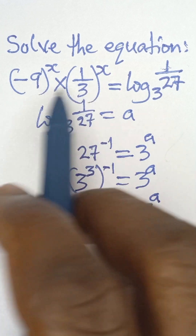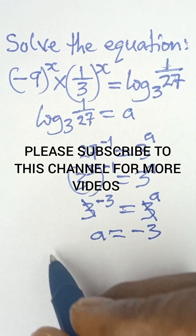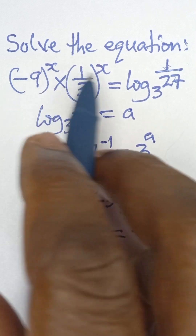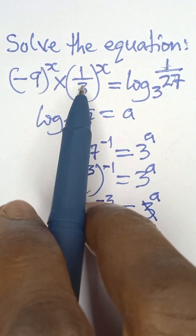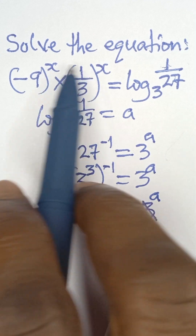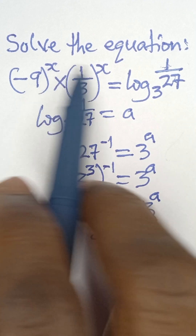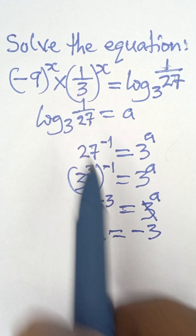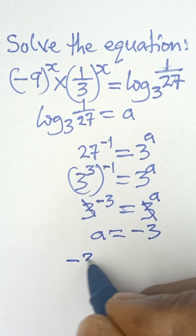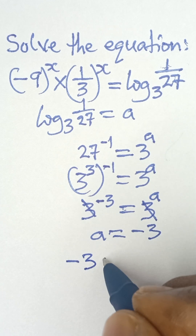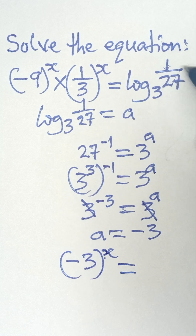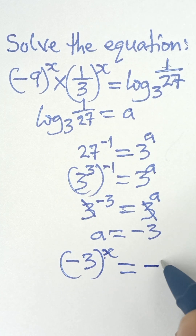Coming back to the left-hand side, since negative 9 and 1 over 3 are multiplying each other and their powers are the same, we multiply the bases together. Negative 9 multiplied by 1 over 3 gives negative 3, so the left-hand side becomes negative 3 raised to the power x, which equals the right-hand side, negative 3.